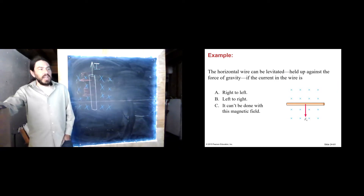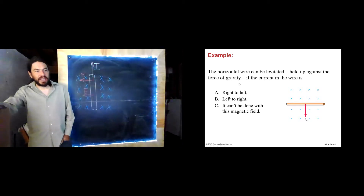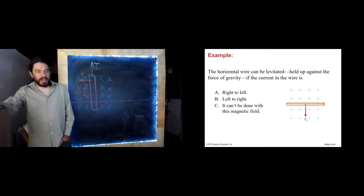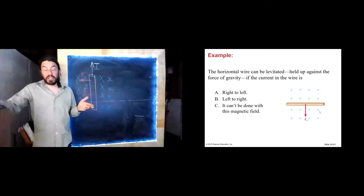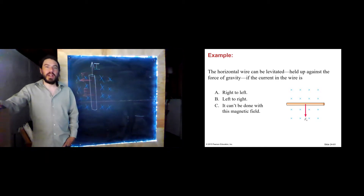Let's just practice a quick example. Here we see a horizontal wire, and this says it can be levitated — in other words, held up against the force of gravity — if the current in the wire is in what direction? Notice that this arrow represents the force of gravity. So this is like a side view of a real wire on Earth. Real wires have weight, therefore there is a force of gravity on it. Can we run the current in a direction such that the magnetic force will oppose the gravitational force and levitate this wire?